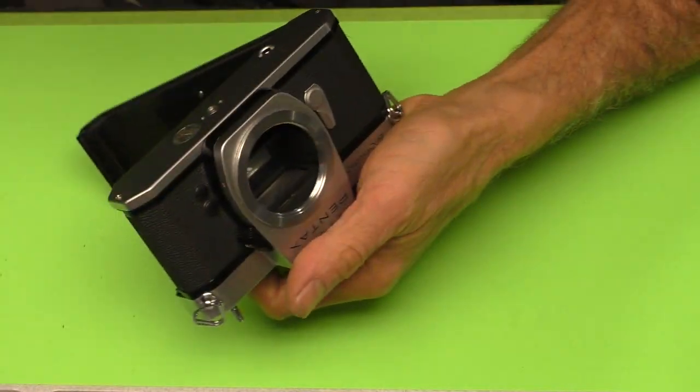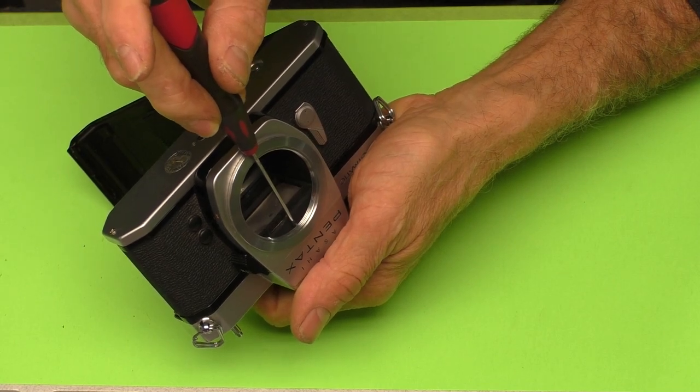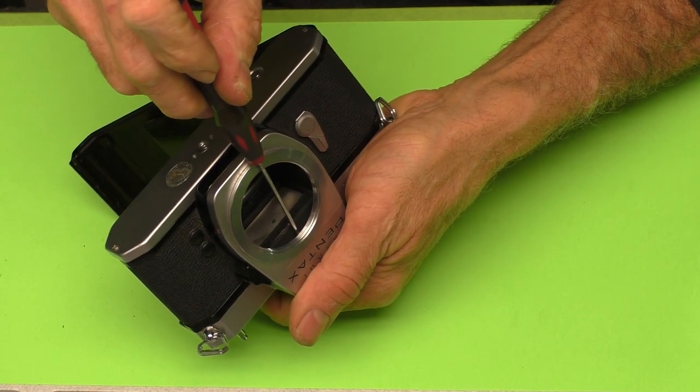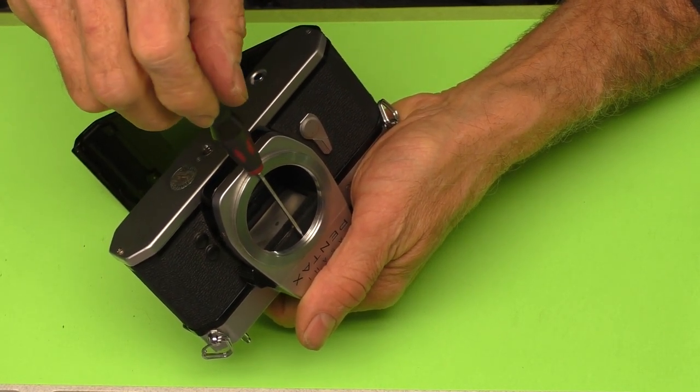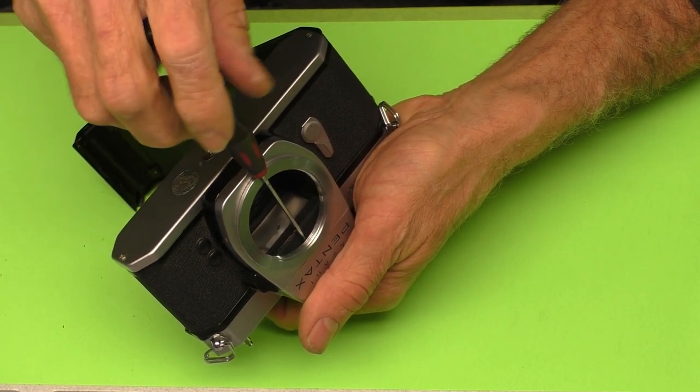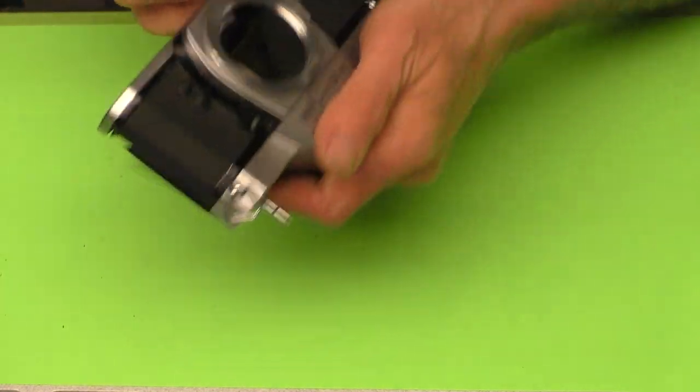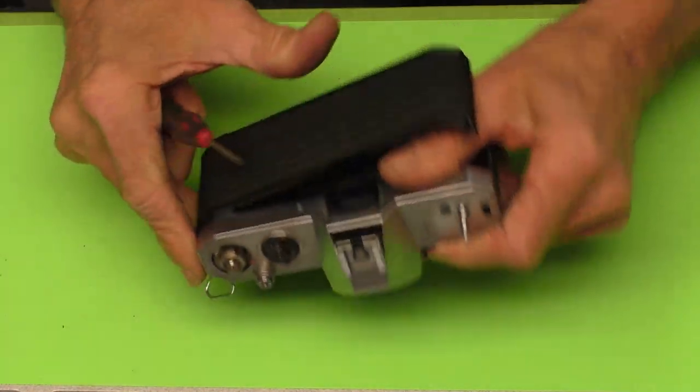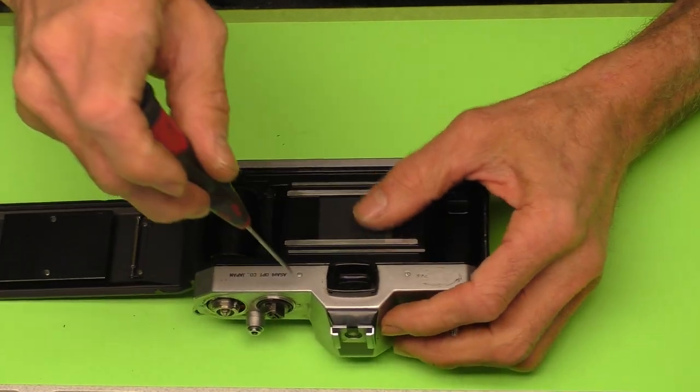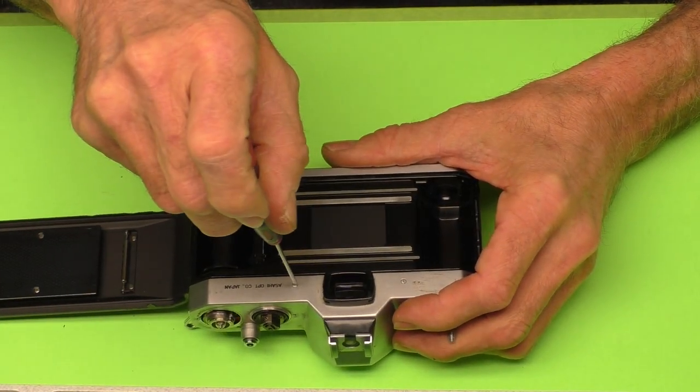And it's kind of captured in the body of the camera. So it won't screw all the way out. So you just basically back it off until you feel it meet a little resistance. And then you go to the back. We're going to take these two screws out.